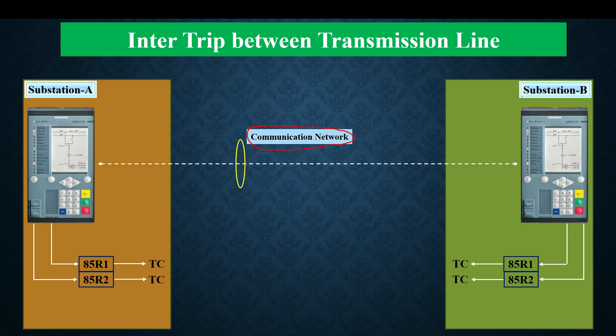The difference between these two tripping relays is that one is a high-speed trip relay and the other is a lockout trip relay. 85R1 can be considered equivalent to a 94 tripping relay, and 85R2 is a lockout relay such as an 86 relay. 85R1 is used for fast or instantaneous tripping, and 85R2 is used for delayed tripping.